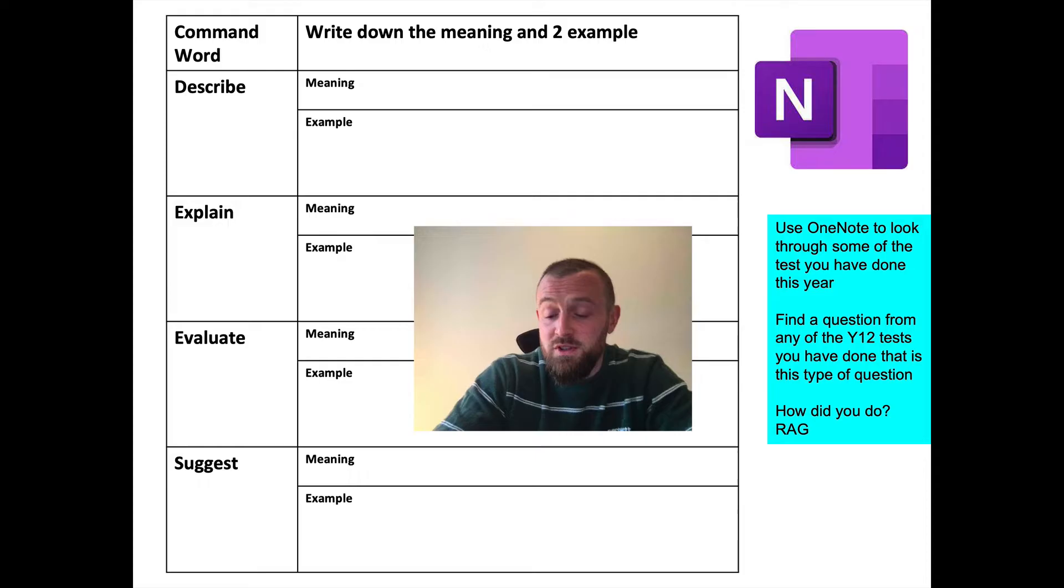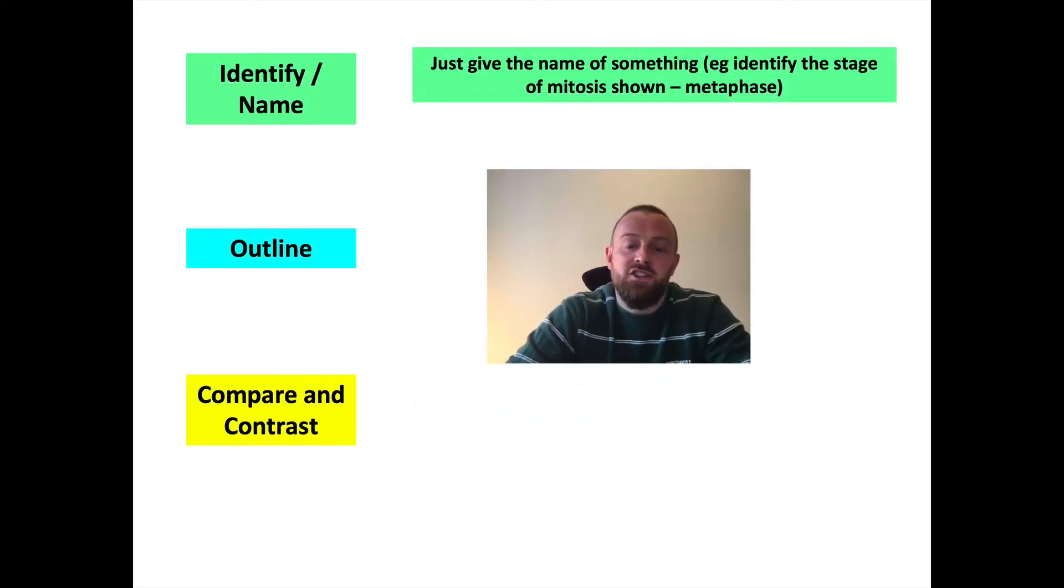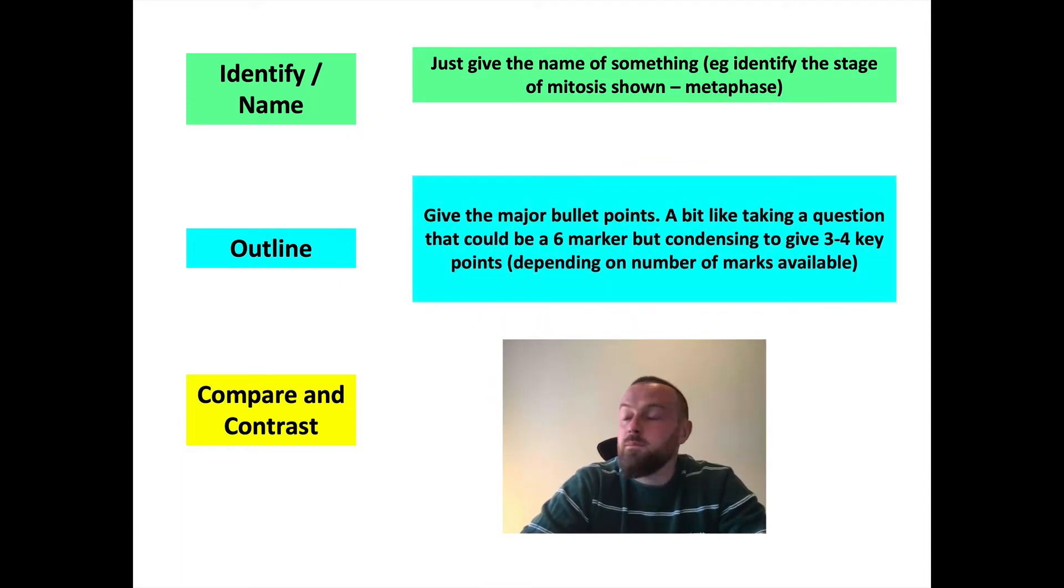OK, I hope you found some examples. You might have noticed when you're looking at your past papers that there are a few other types of questions that sometimes come up as well. You get identify or name - really, just give the name of something. For example, identify the stage of mitosis shown in a picture - that could be metaphase. You get outline - maybe outline the stages of ultrafiltration. That's like give the major bullet points, a bit like taking a question that could be a six marker and condensing it to give three or four points. It's basically the same as describe, but phrased as outline.